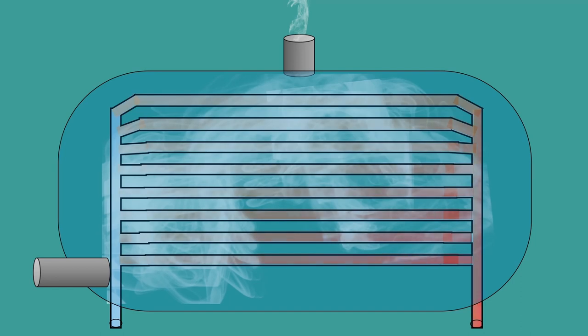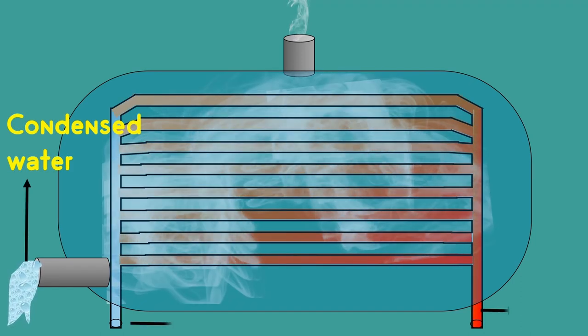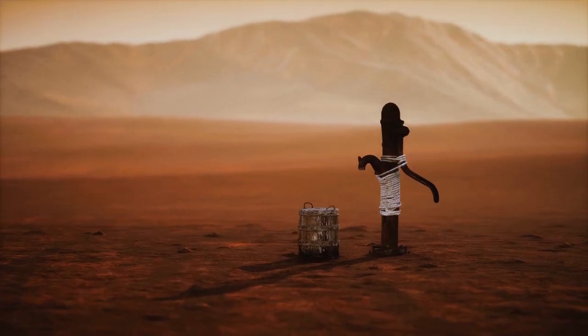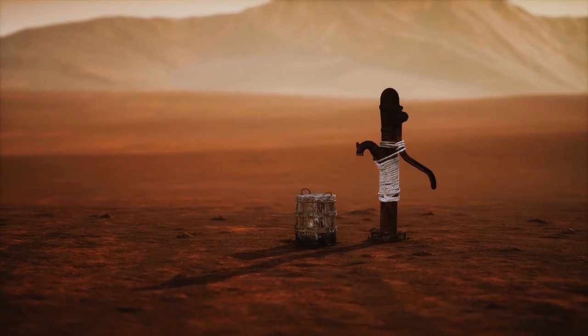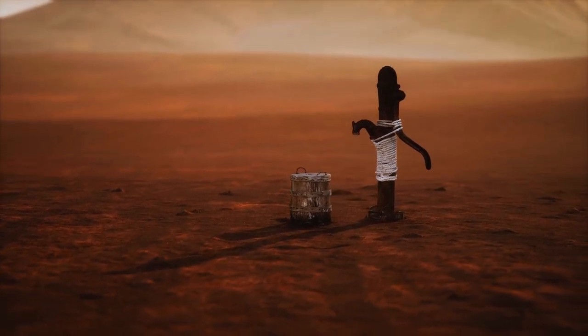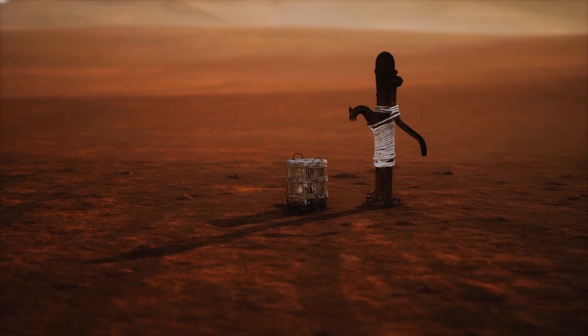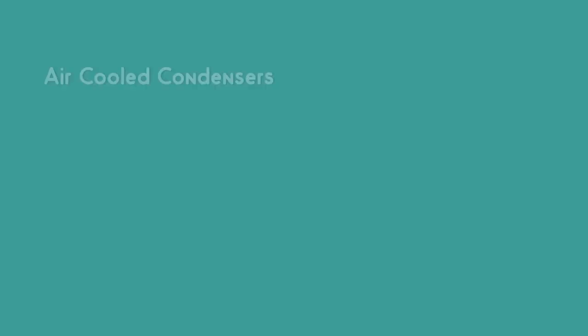In these systems condensation is done with the help of cold water. There are places where water availability is a major issue. In those places instead of water air is used. This kind of cooling system is called air cooled condensers.